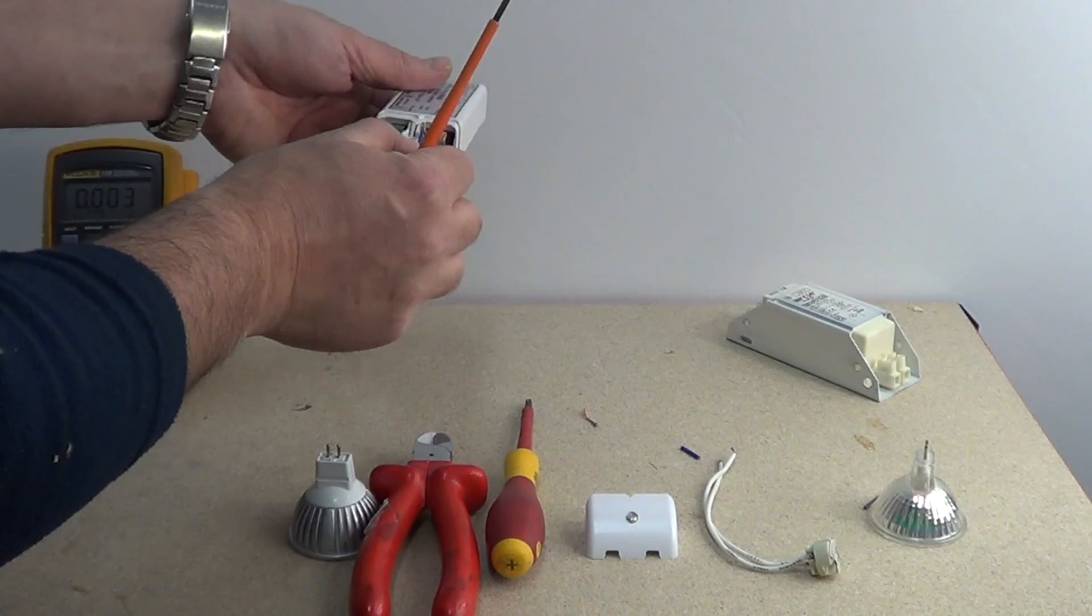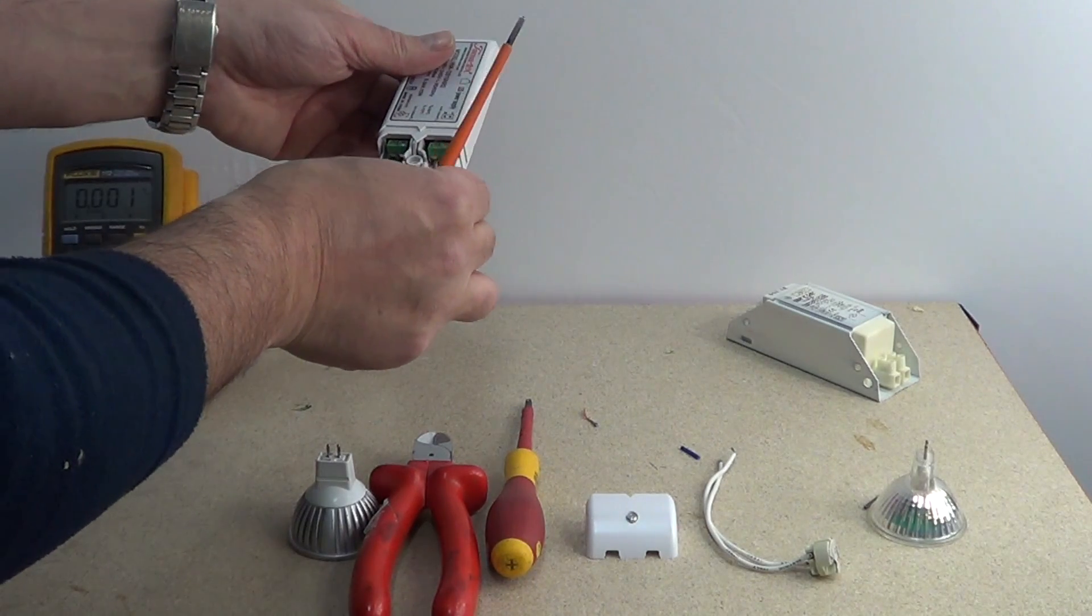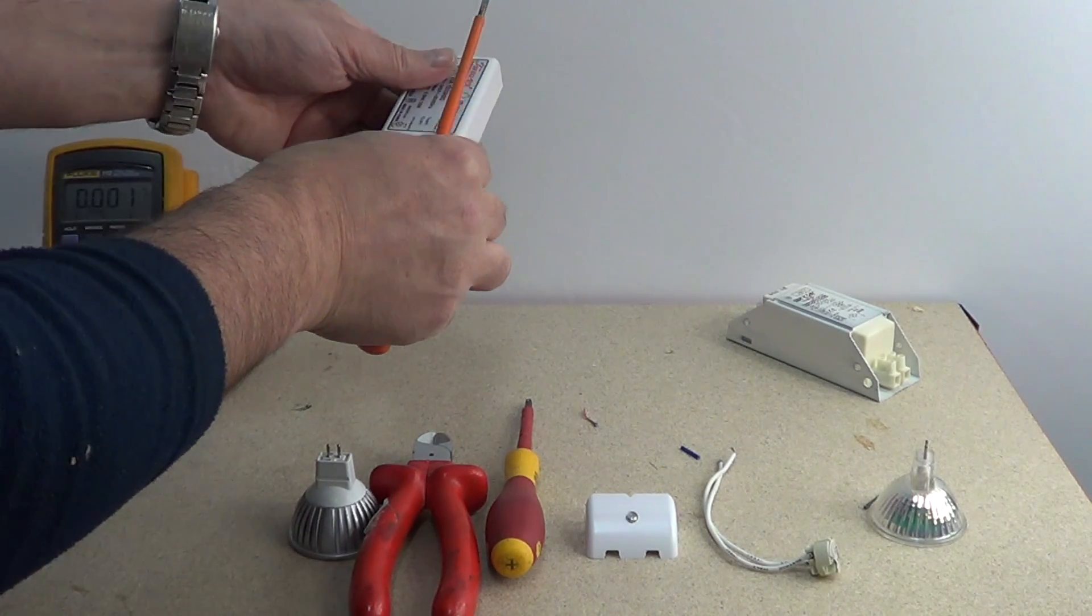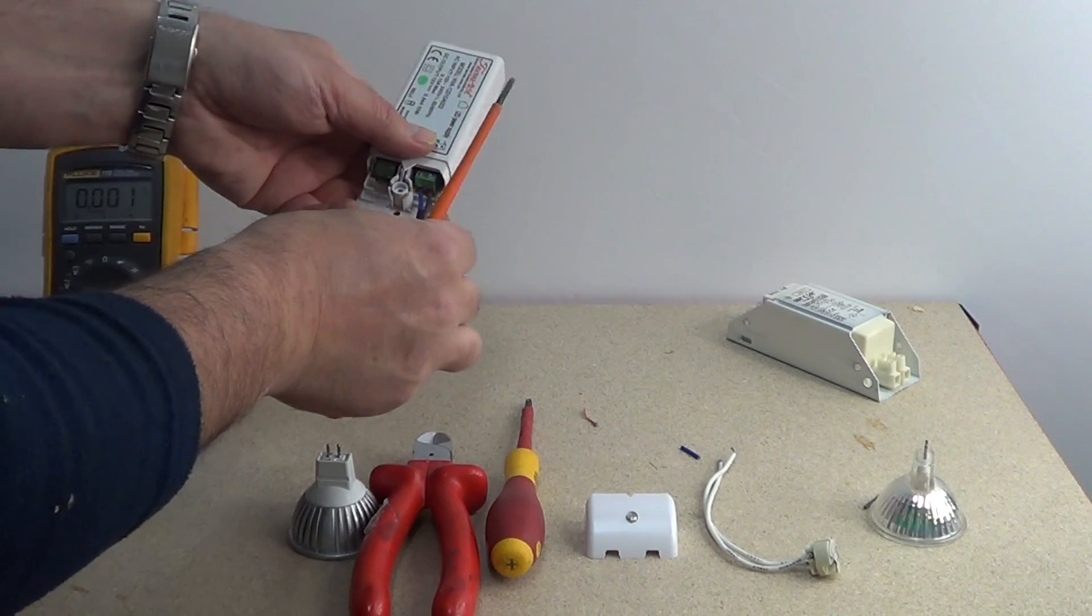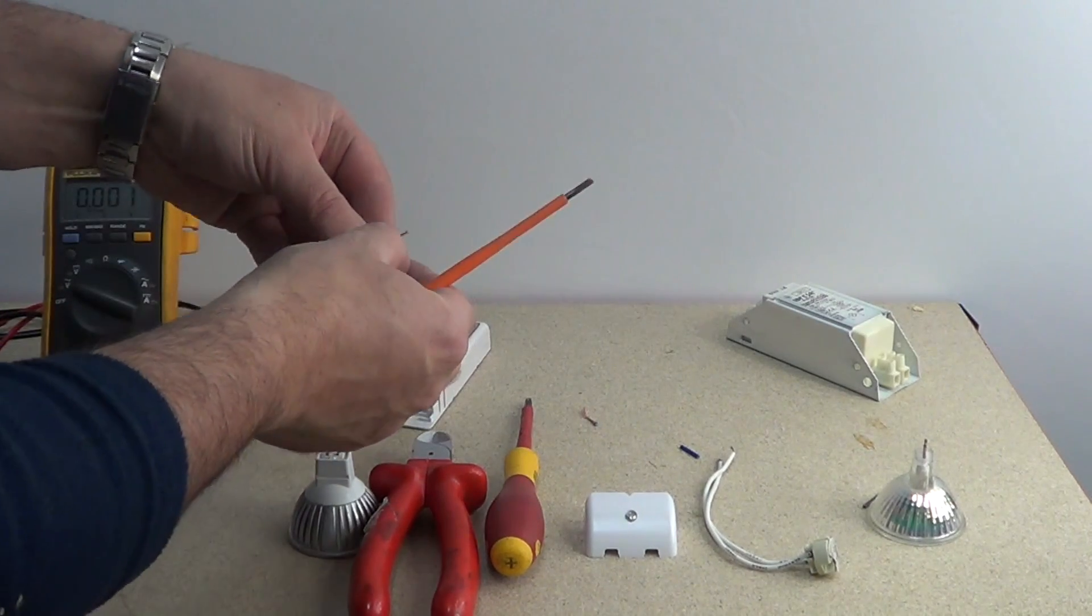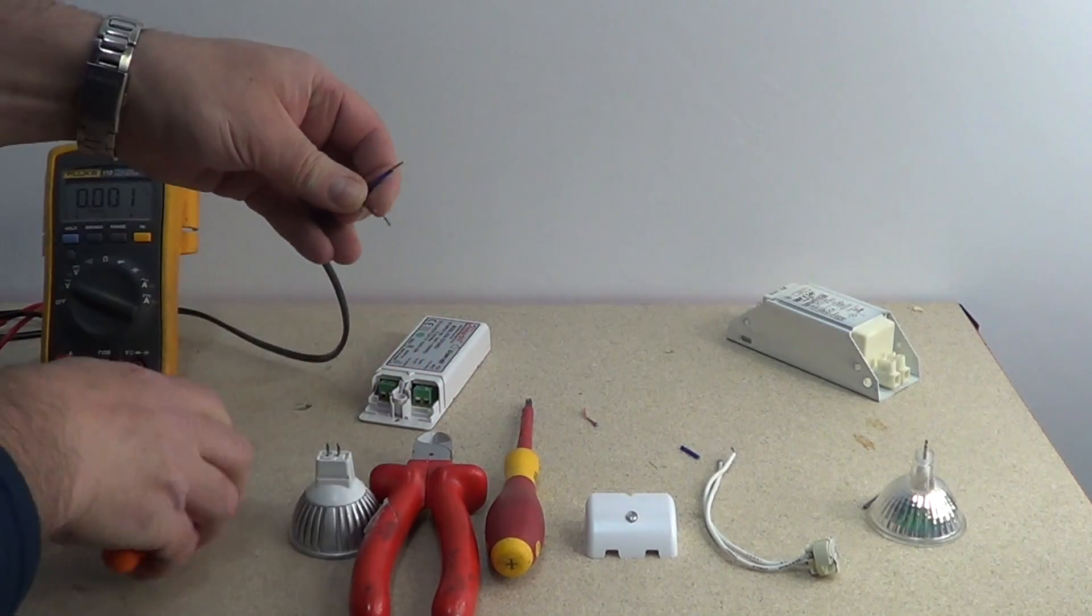Okay let's connect the live and neutral. The connection should be just long enough to go in to fit properly. But not too long that copper protrudes from the connector block.